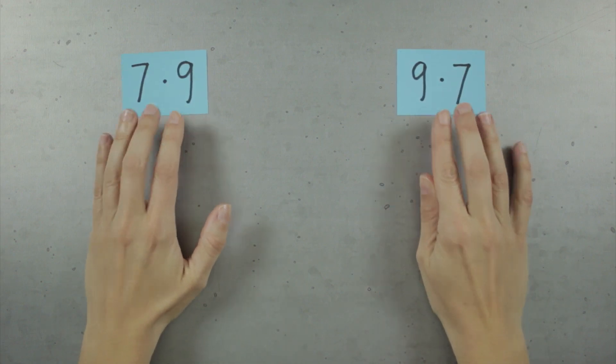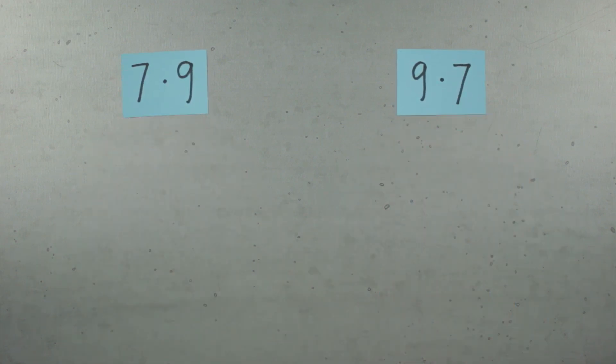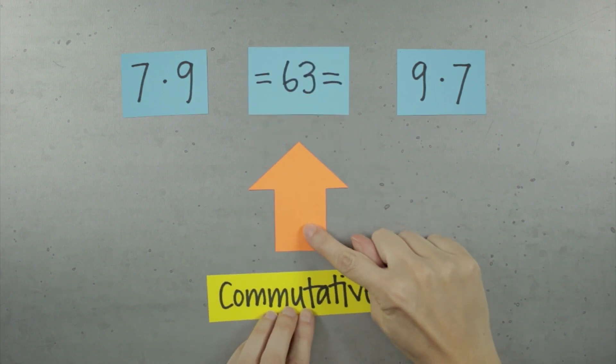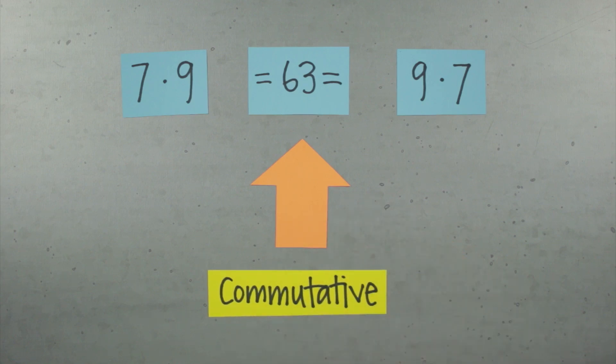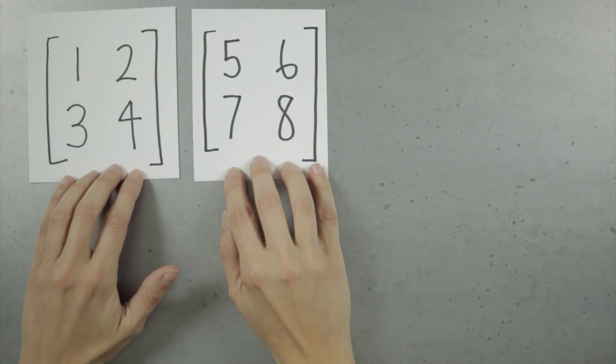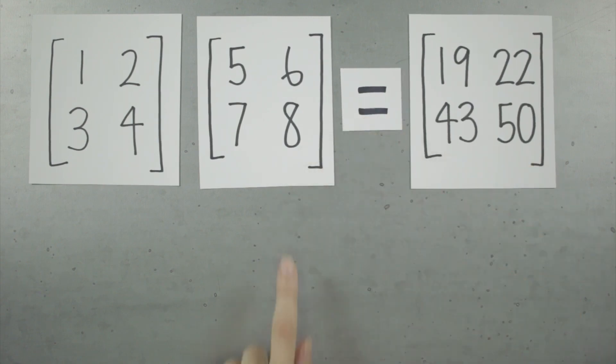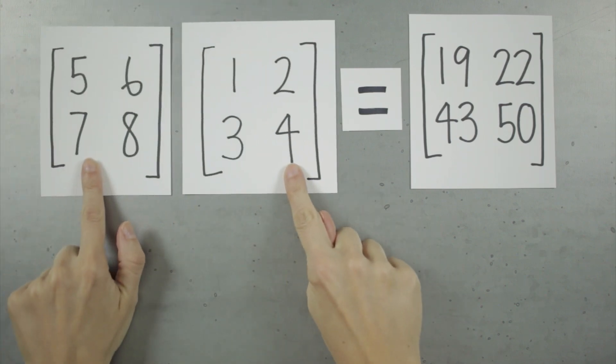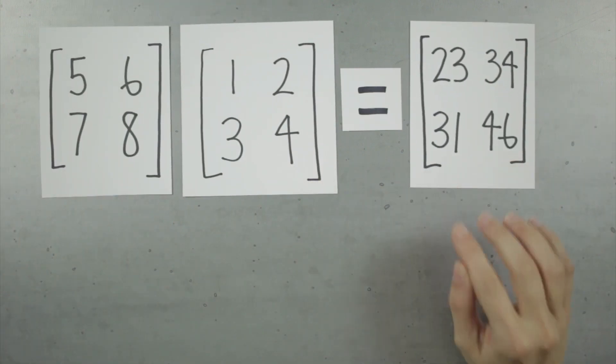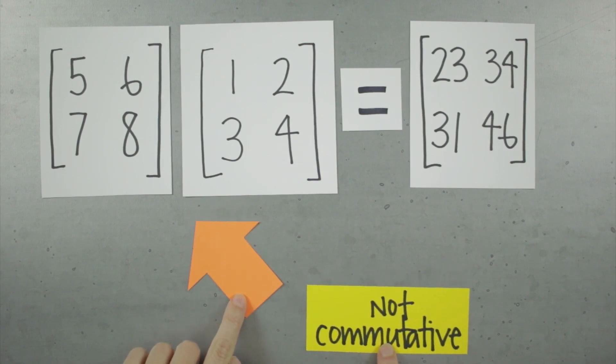But what about when we want to multiply one matrix by another matrix instead of just by a scalar? Well, we first have to say that unlike real number multiplication, where 7 times 9 always gives you the same result as 9 times 7, matrix multiplication is not commutative, meaning that you can't just flip the order of the multiplication and get the same result. The result of this multiplication is this, but if I flip the order of the multiplication, the resulting matrix is totally different. So matrix multiplication is not commutative, order matters.